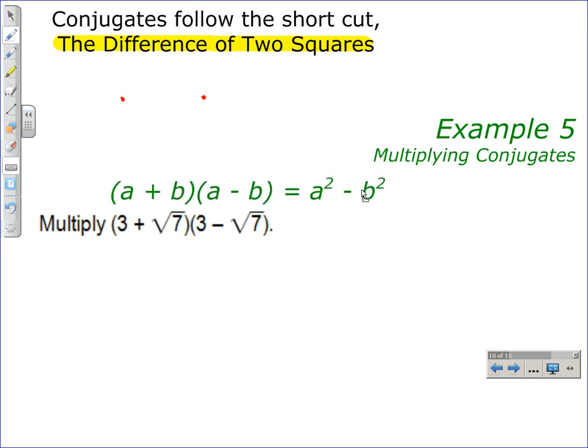So if we take a look at that with this example where we have to multiply the conjugates, 3 plus the square root of 7 and 3 minus the square root of 7, we can apply this difference of two squares.